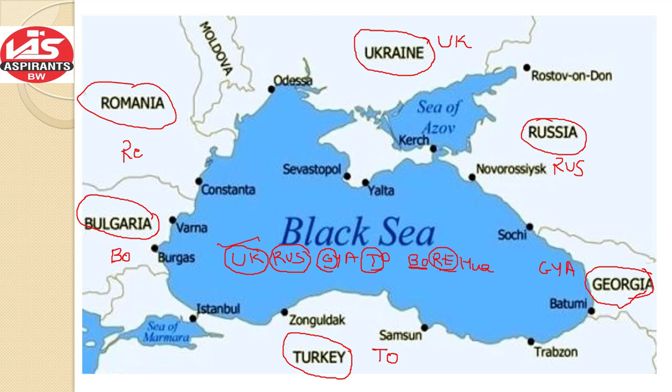That is Ukraine, Russia, Georgia, Turkey, Bulgaria and Romania — and this is in the clockwise direction. So we have learned the trick for countries in clockwise direction, so even if UPSC asks you to arrange the countries clockwise or anti-clockwise, you will be easily able to do that. UK Rus gaya toh Bor gaya: UK is for Ukraine, Rus is for Russia, Gaya is for Georgia, Toh is for Turkey, and Bor is for Bulgaria and Romania.